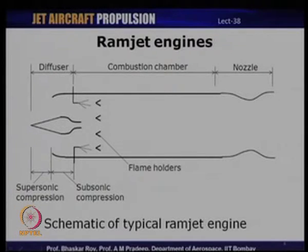Schematically, a ramjet has just three components: a diffuser, a combustion chamber, and a nozzle. These three components together generate thrust, whereas a typical turbojet engine requires much more complexity — a compressor, combustion chamber, and turbine. A ramjet produces thrust without these additional components. The basic thermodynamic cycle of a ramjet is the simple Brayton cycle, which we have already discussed in detail as applied to turbojet and turbofan engines.